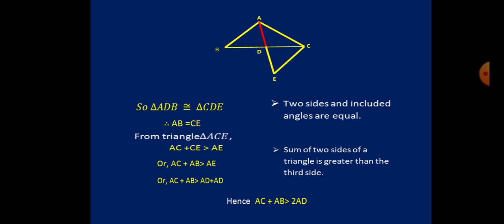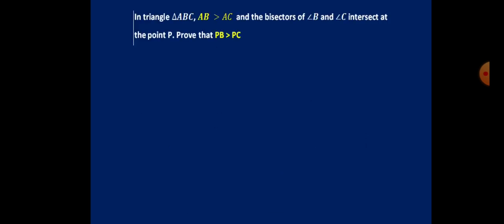Try to write down all the theorems in your copy. Now let us prove another theorem — an application of the previous theorems. In triangle ABC, side AB is greater than side AC, and the bisectors of the two angles intersect at P. We need to show that PB > PC.